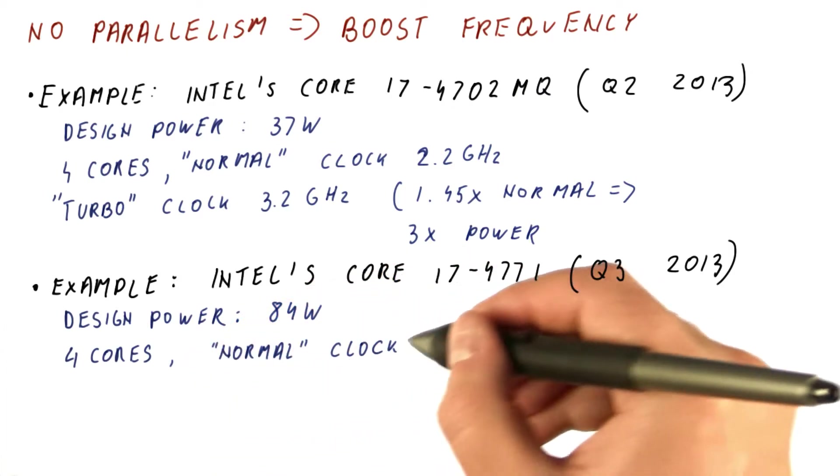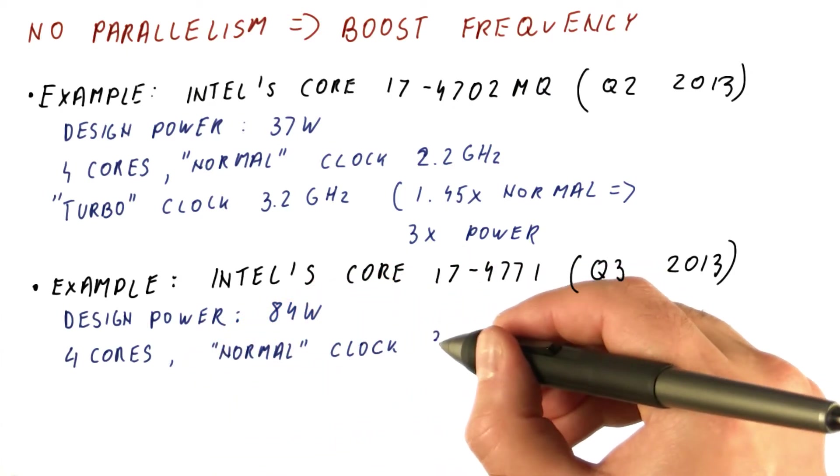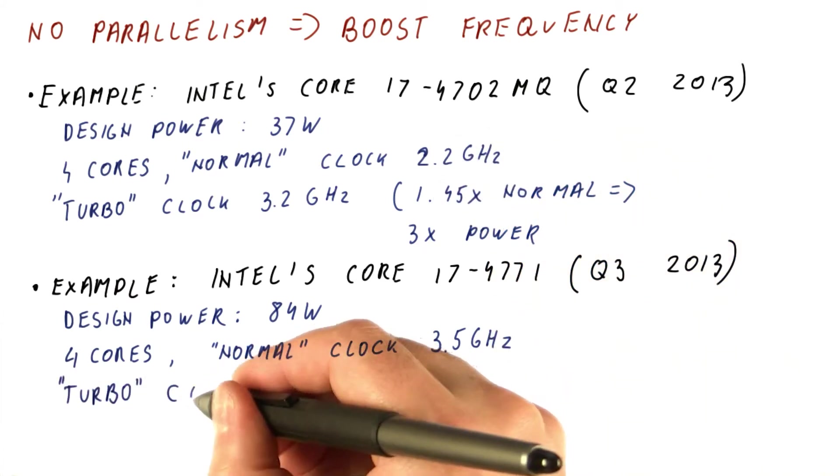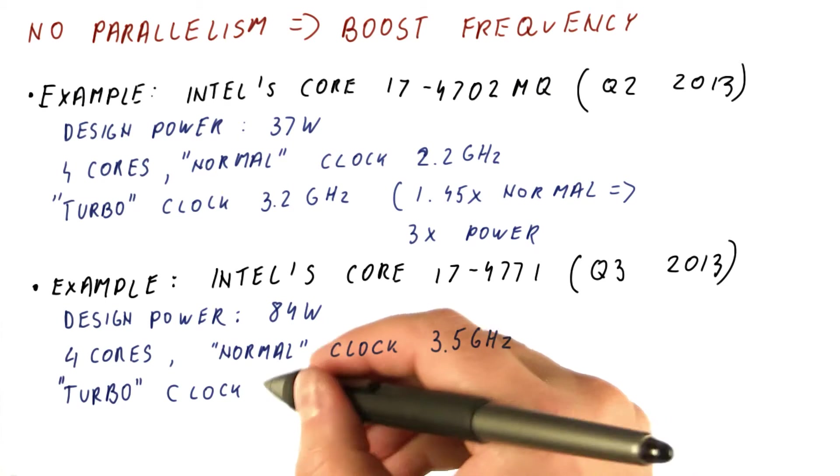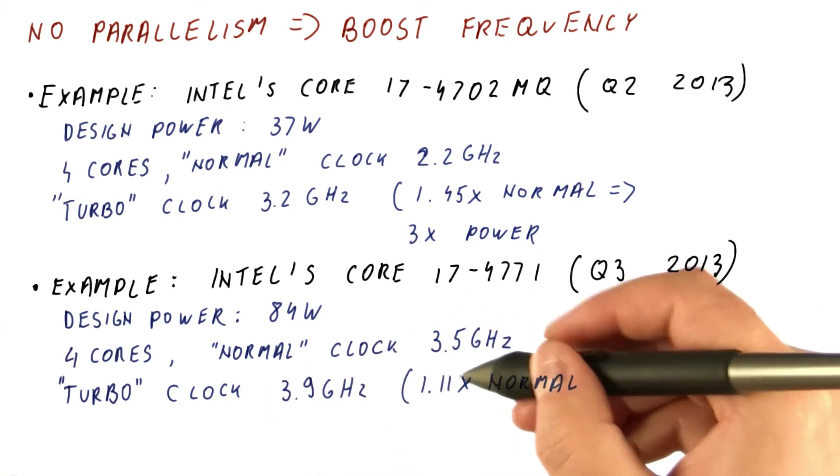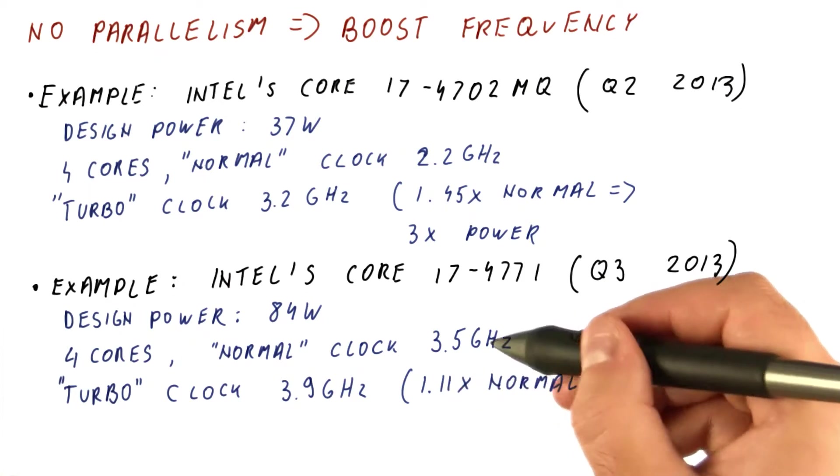But the normal clock of a core is now 3.5 gigahertz, much larger than in the mobile processor. The turbo clock, when running only one core, is 3.9 gigahertz, or only 11% above normal.